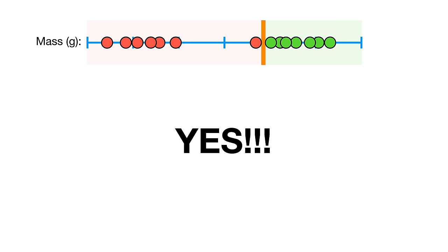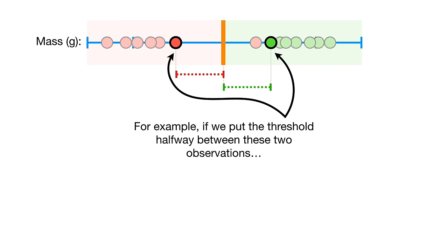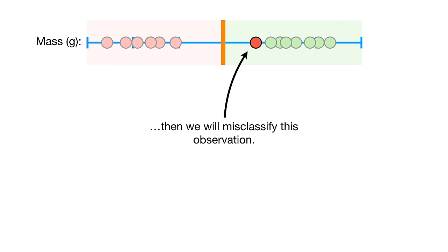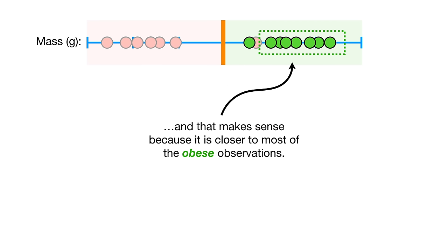To make a threshold that is not so sensitive to outliers, we must allow misclassifications. For example, if we put the threshold halfway between these two observations, then we will misclassify this observation. However, now when we get a new observation here, we will classify it as obese — and that makes sense because it is closer to most of the obese observations.